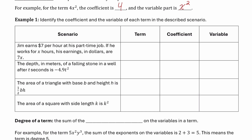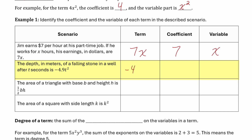In the first scenario, Jim earns $7 per hour at his part-time job. If he works for x hours, his earnings in dollars are 7 times x. Our term is 7 times x, which is a product of a number and a variable. The number part, the 7, is our coefficient, and the variable part is x. The second scenario: the depth in meters of a falling stone after t seconds is negative 4.9t squared. The number part is negative 4.9, and the variable part is t squared.